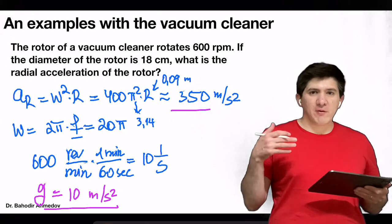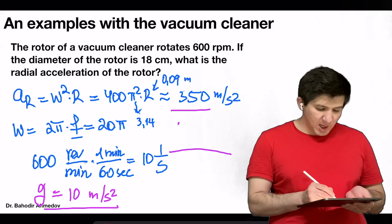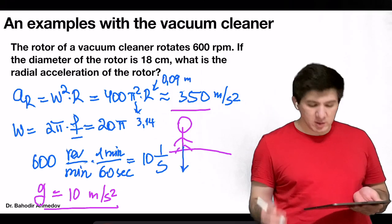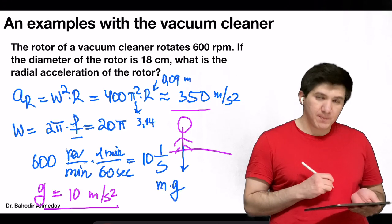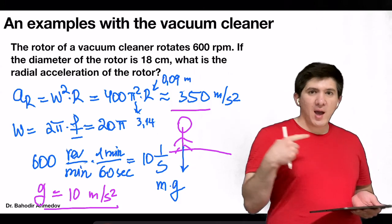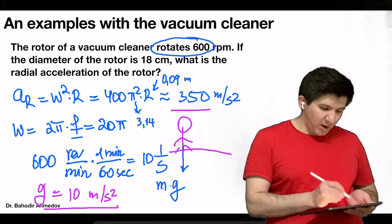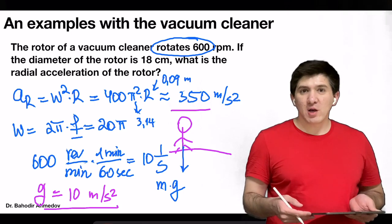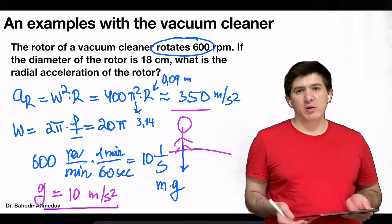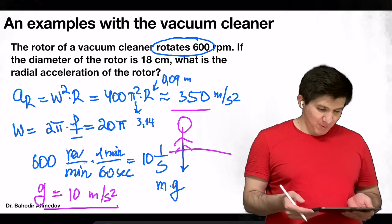Note that on Earth, all of us feel the gravitational force equivalent to 1G. The items rotating in the rotor of the vacuum cleaner feel 35 times greater force — about 35G. Interestingly, the gravitational force of the Sun is about 30G, and the force created in a small vacuum cleaner is already equivalent to 35G.